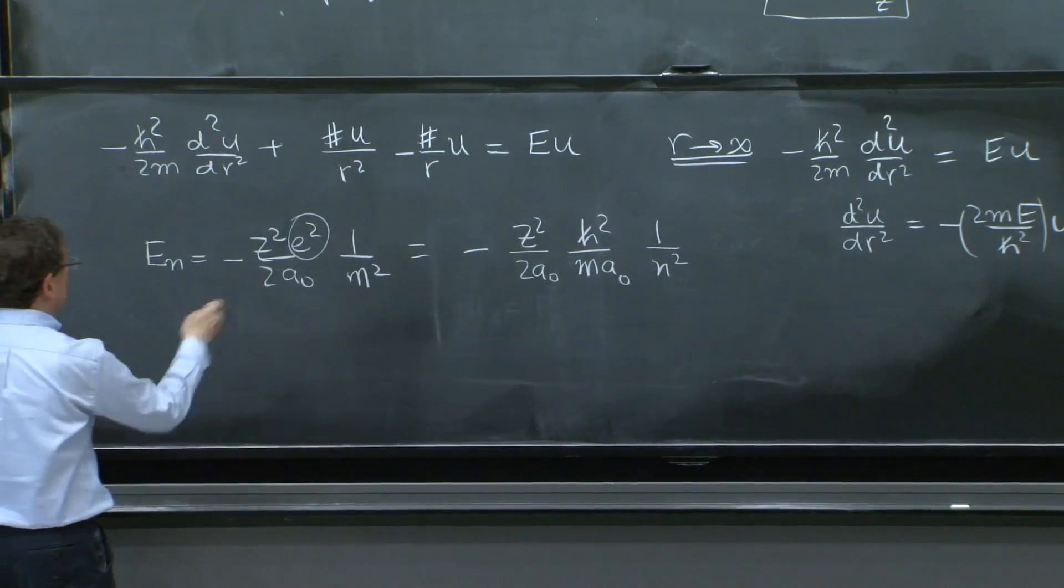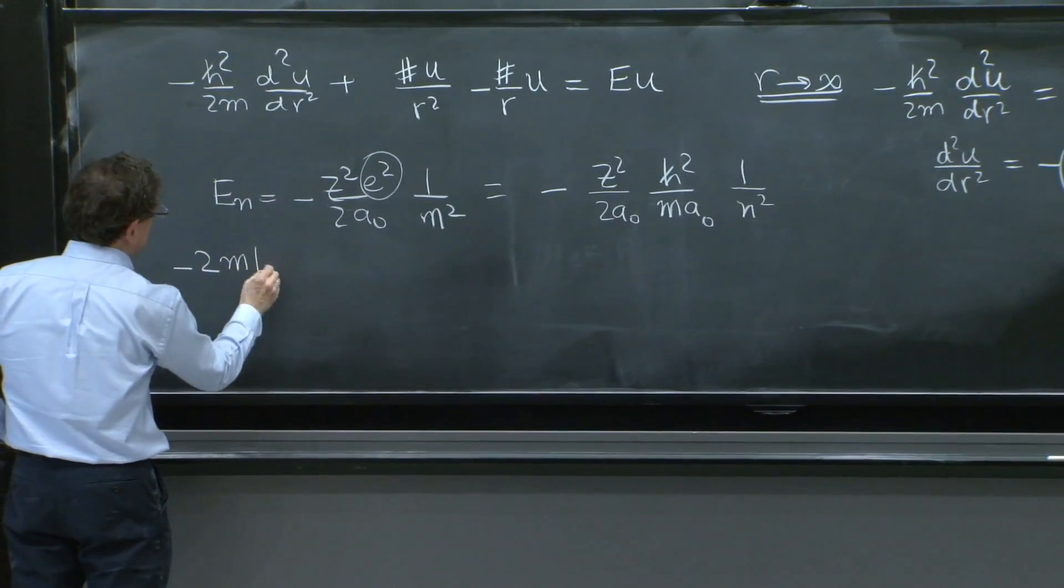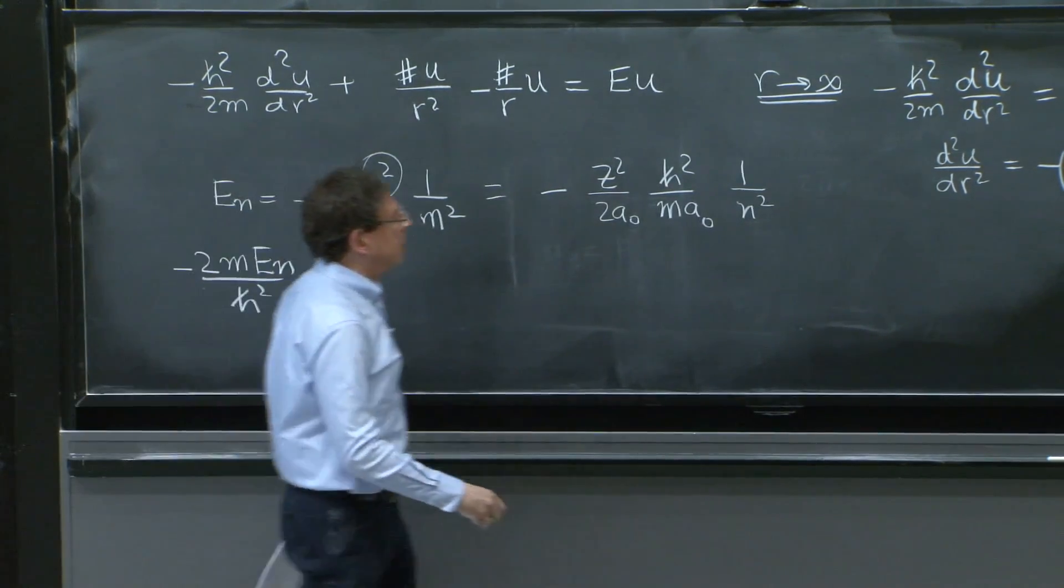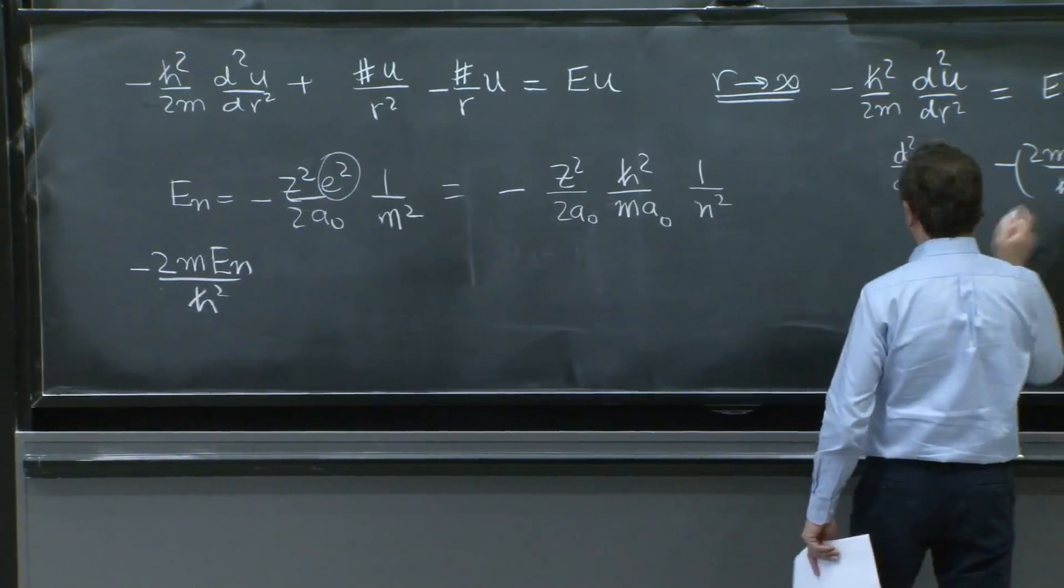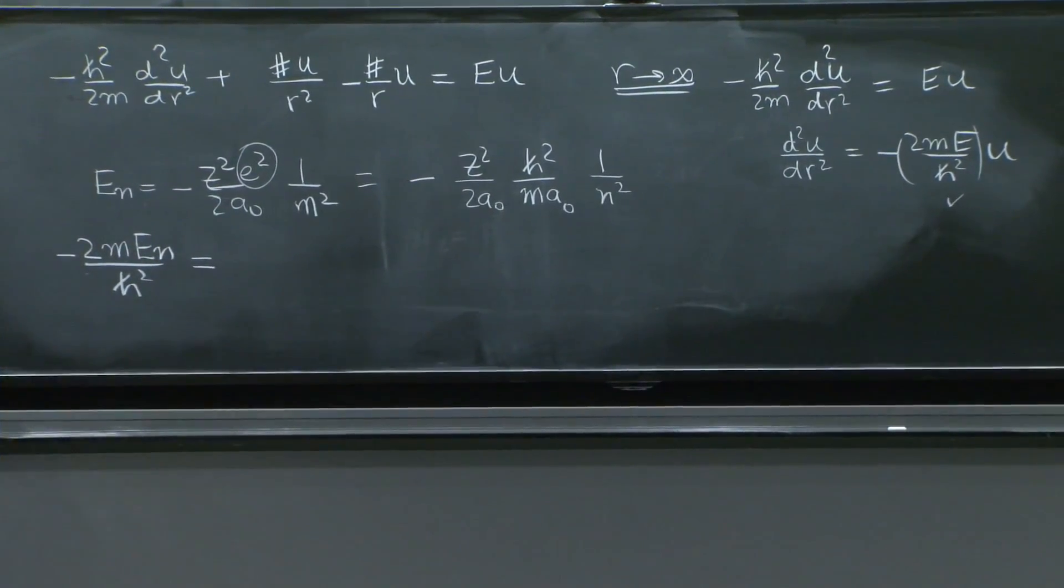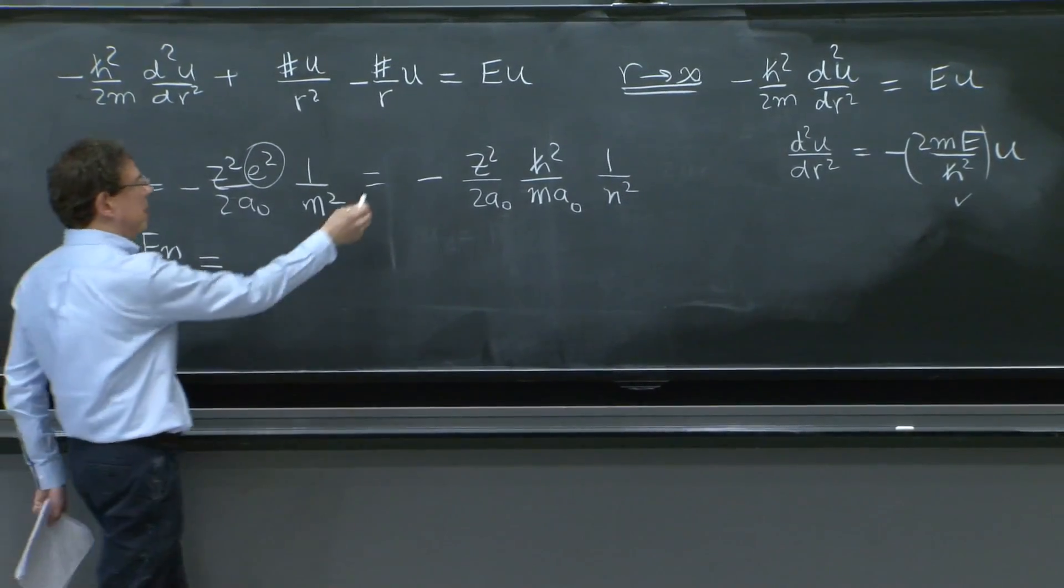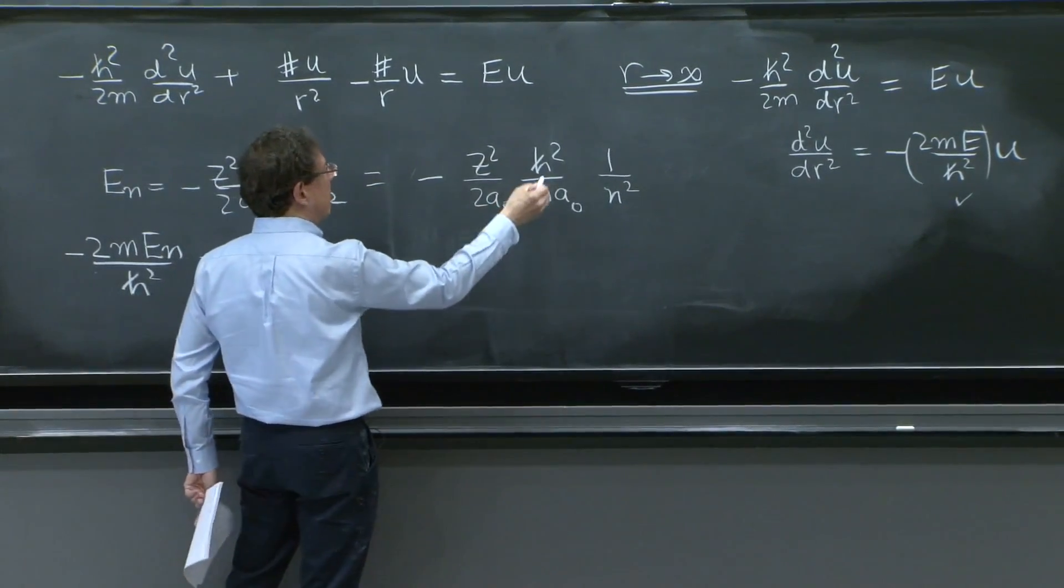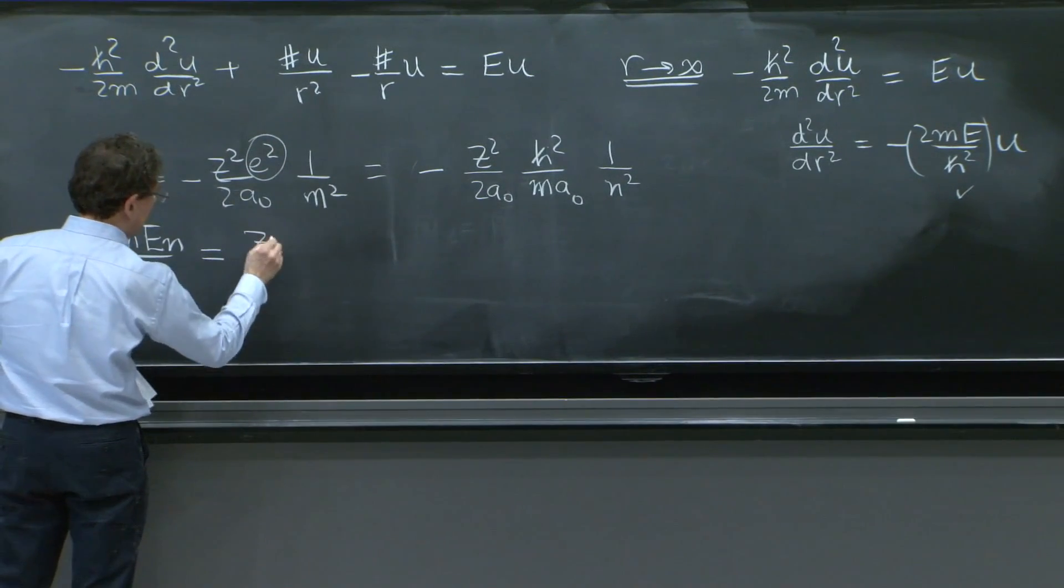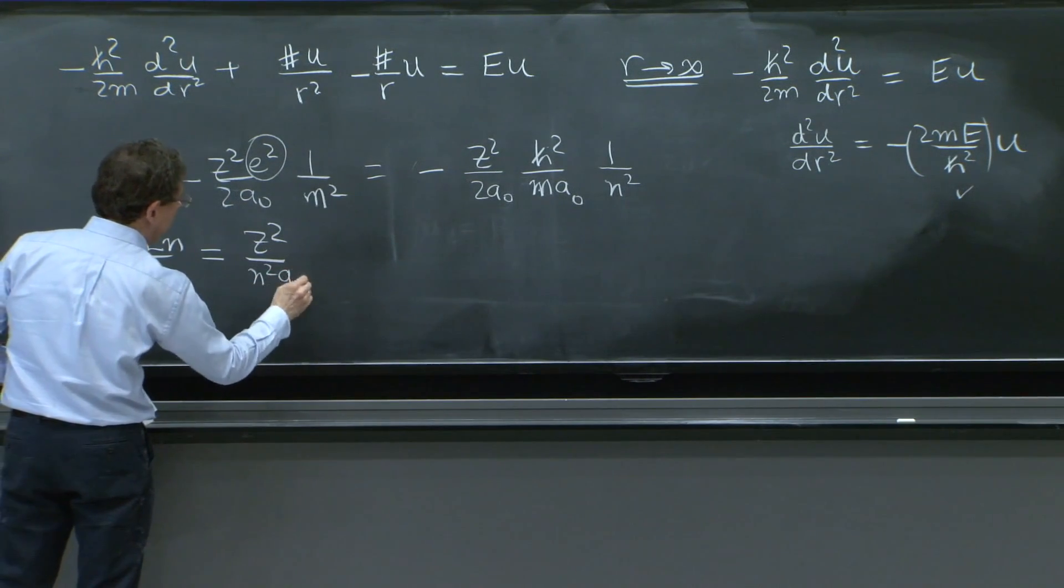Recalling what's the value of the fine structure constant, I can replace e squared from a0 to get the following thing, over 2a0 times h squared over m a0 times 1 over n squared. A little bit of manipulation. So at the end, minus 2m e n over h squared, which is what I need from the differential equation,